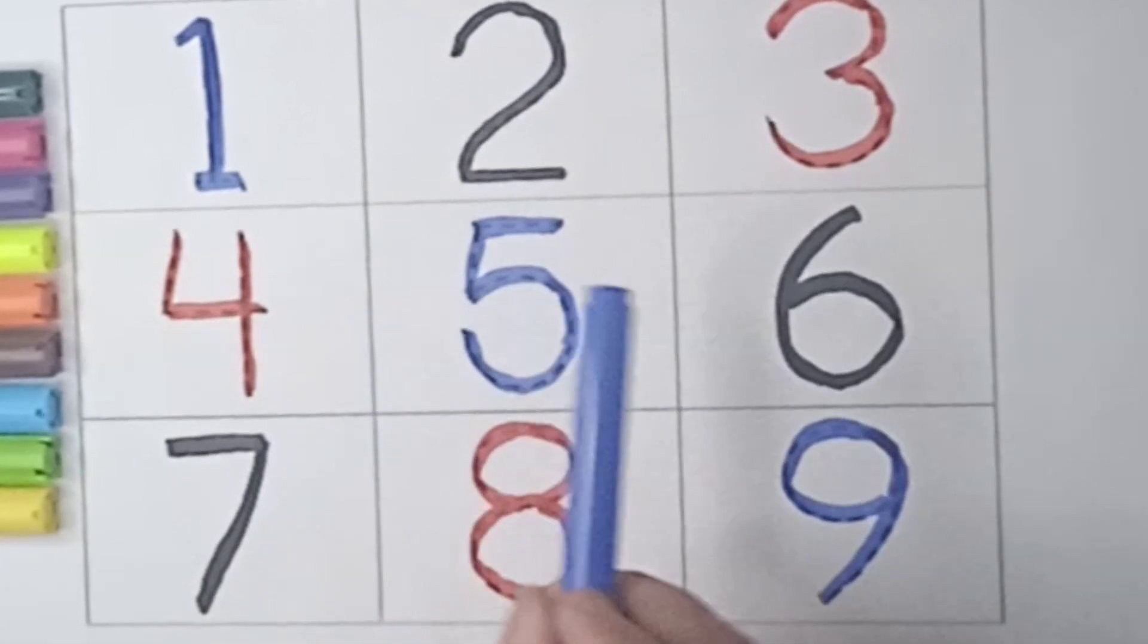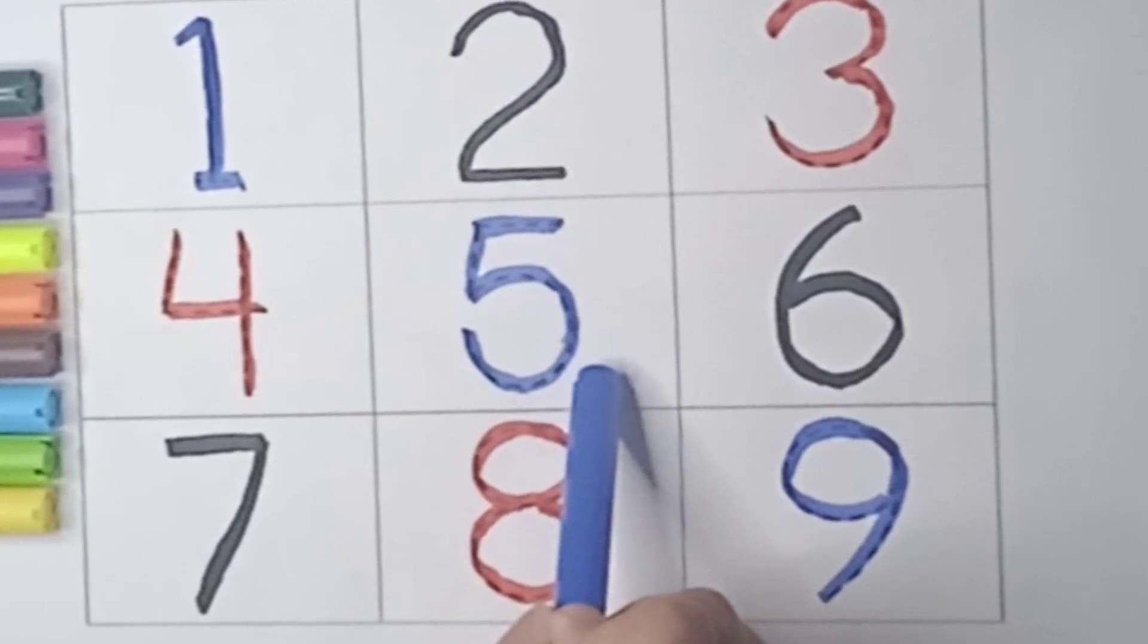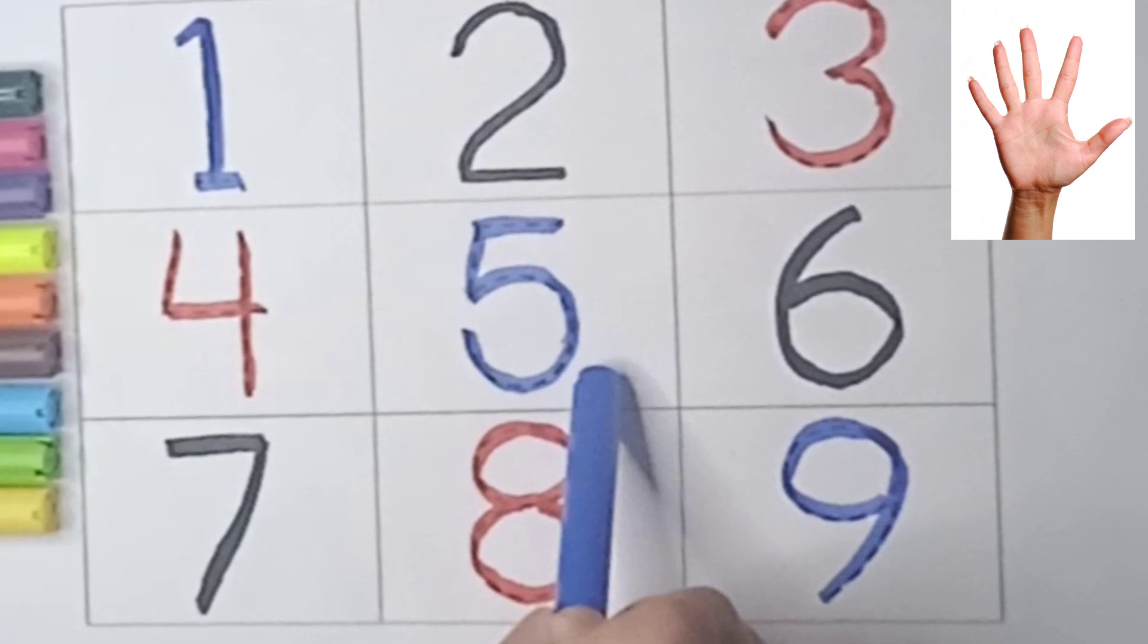This one is number 5. Say 5. Count your five fingers. 1, 2, 3, 4, 5.